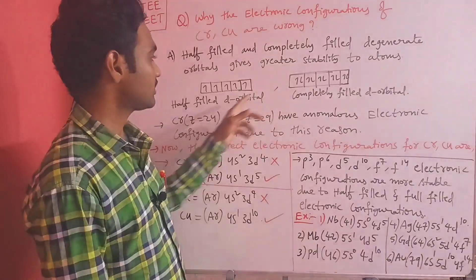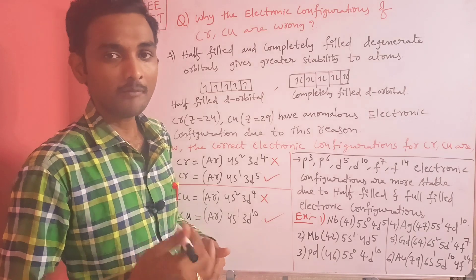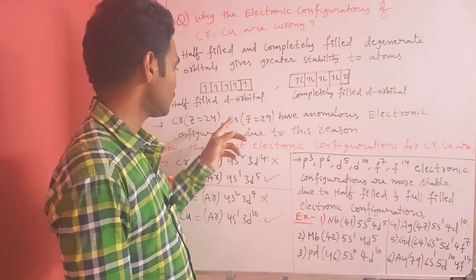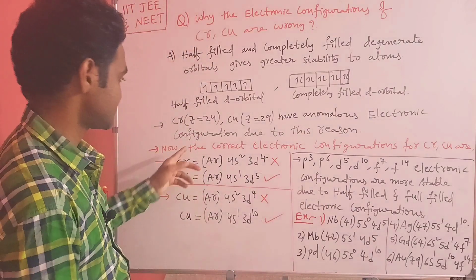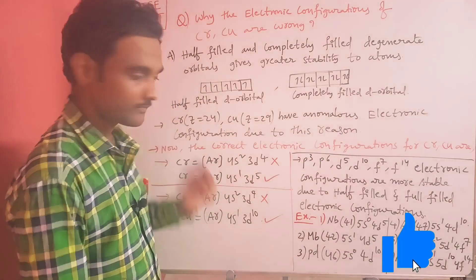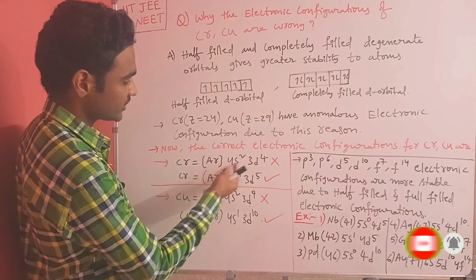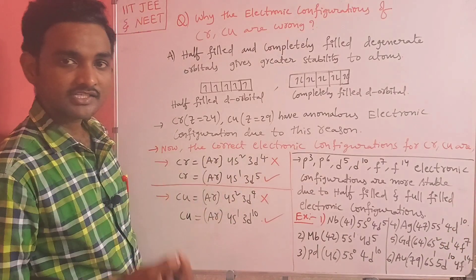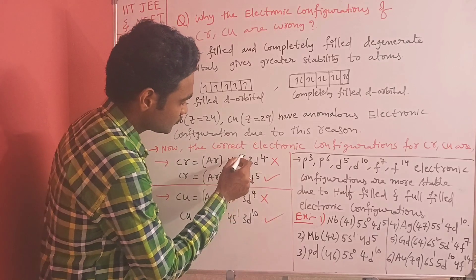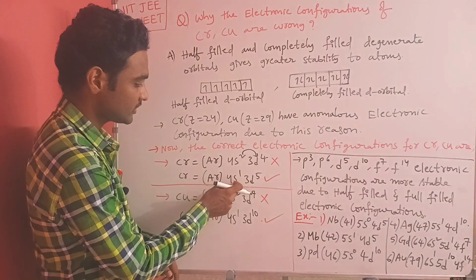Due to this reason, chromium (atomic number 24) and copper (atomic number 29) have anomalous electronic configurations. For chromium, we previously wrote [Ar] 4s2 3d4, but this is wrong because 3d4 is an unstable orbital. To gain stability, one electron jumps from 4s to 3d, giving a half-filled 3d5. So the correct configuration of chromium is [Ar] 4s1 3d5.